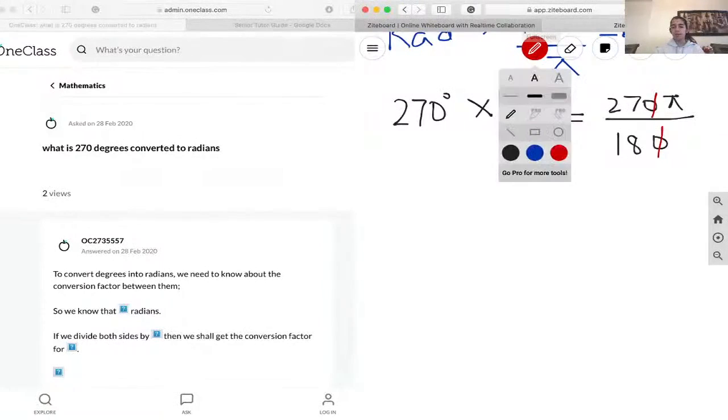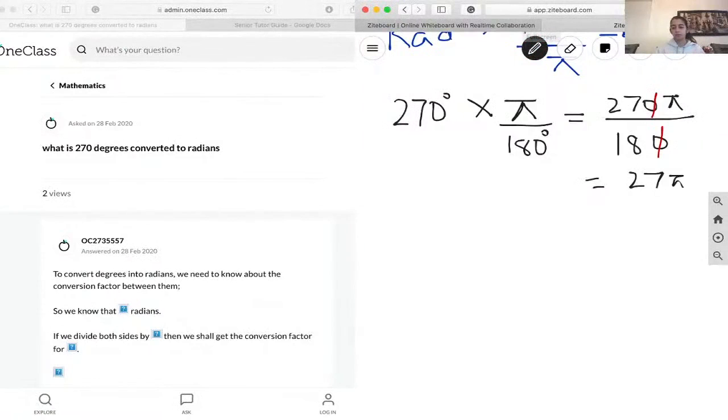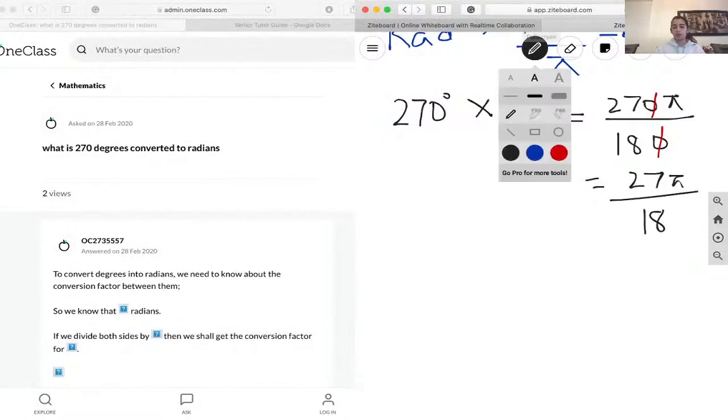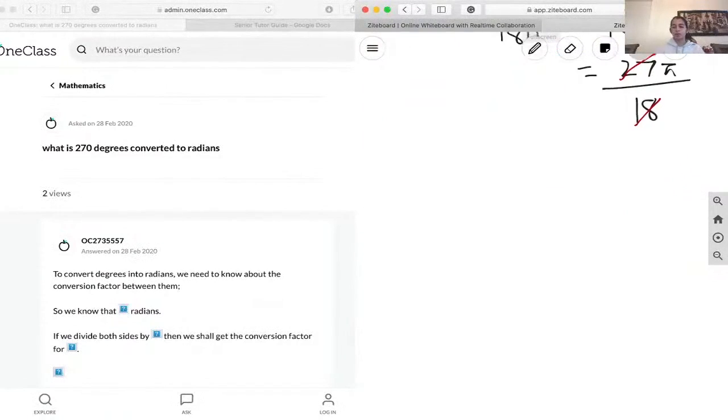This can be further divided by, let's say, 3. And if we divide, you have to divide the numerator with the same number you divide the denominator. Whatever you do to the numerator, you have to do to the denominator. And so if we divide 27 by 3, we're really left with 9 over, 18 divided by 3 is 6. And don't forget the pi.